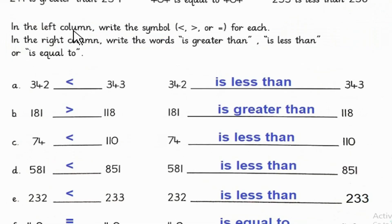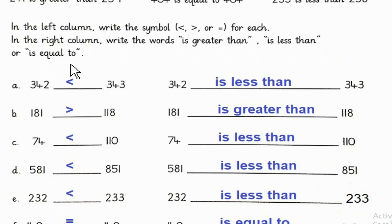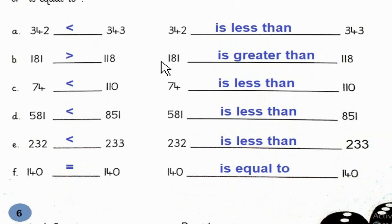In the left column, write the symbols less than, greater than, or is equal to for each. In the right column, write the words: is greater than, is less than, or is equal to.